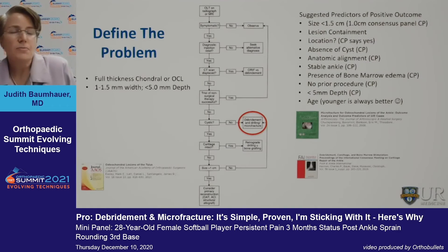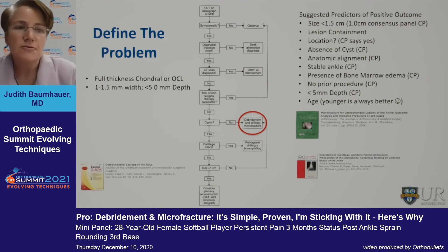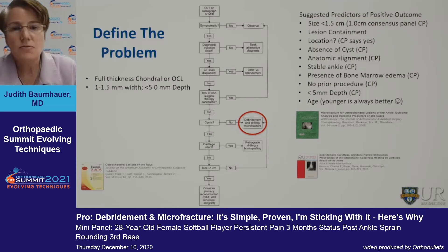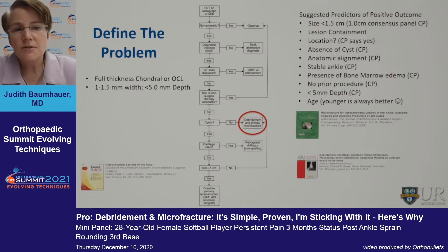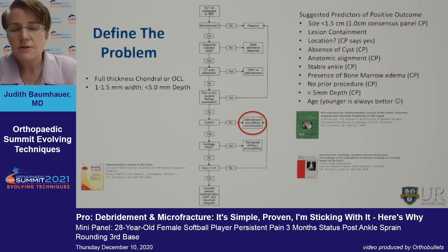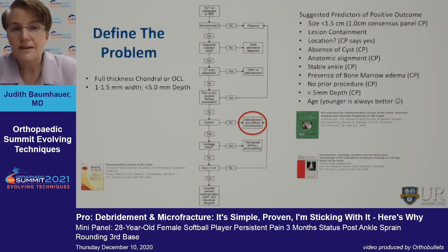Is it appropriate to do a debridement and microfracture? We really have to define the problem. What kind of osteochondral defect do we have? There's been a lot of literature regarding defining the osteochondral lesion, and a number of factors that might make this the right choice for this individual — in some cases, the first choice and hopefully the last choice.